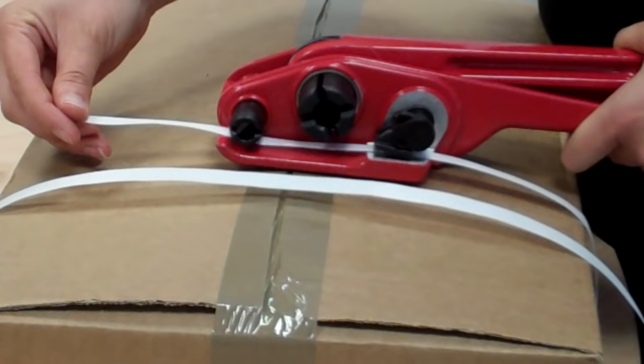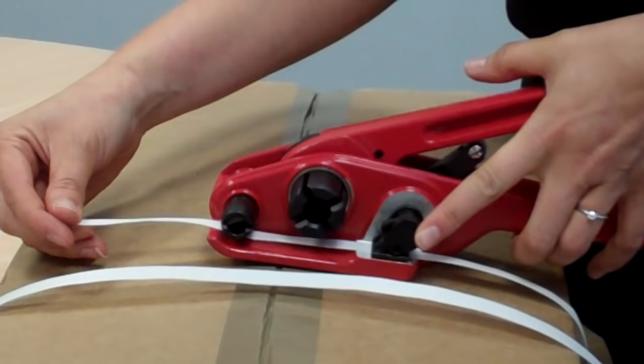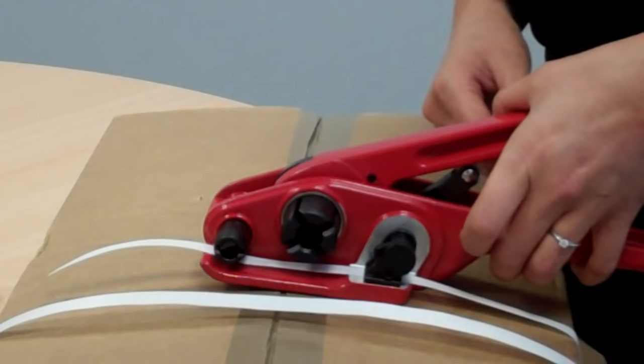Leave yourself a good two or three inches at the front there to work with. Now, just releasing the handle on the tool, you see how the clamp goes down and that piece of strap is secure inside the tensioner tool.